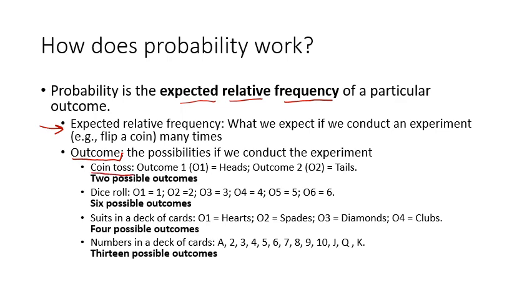If we use a coin toss, then we have outcome 1, heads, we'll call it O1, and outcome 2, we'll call it O2, tails. That's it. There are two possible outcomes. In a die roll, outcome 1 is 1, outcome 2 is 2, we could get a 3, we could get a 4, we could get a 5, we could get a 6. So there are six possible outcomes. If we're wondering what the odds are of drawing a particular suit from a deck of cards, then we could have outcome 1, hearts, spades, diamonds, clubs, four possible outcomes. Or, if we're looking to see what are the odds of drawing a particular number from a deck of cards, we know we could get ace, 2, 3, 4, 5, 6, 7, 8, 9, 10, jack, queen, king, 13 possible outcomes. So that's what we mean by outcome.